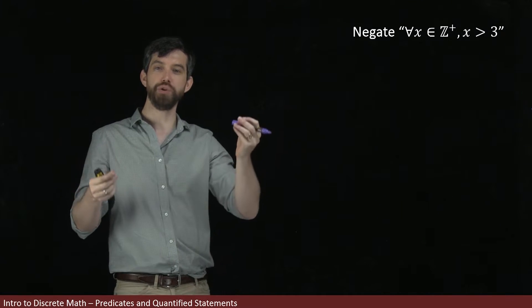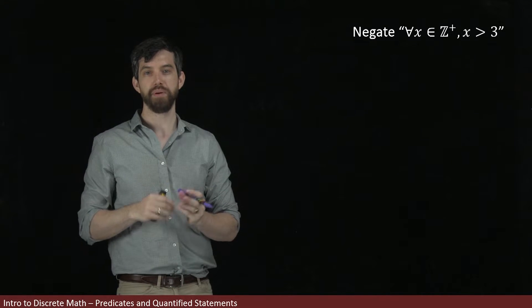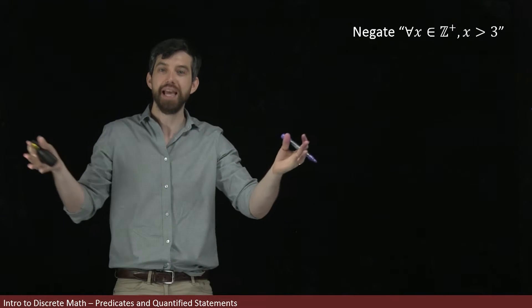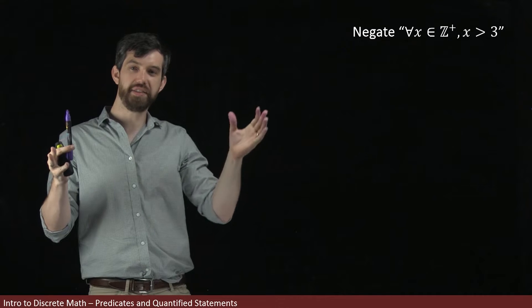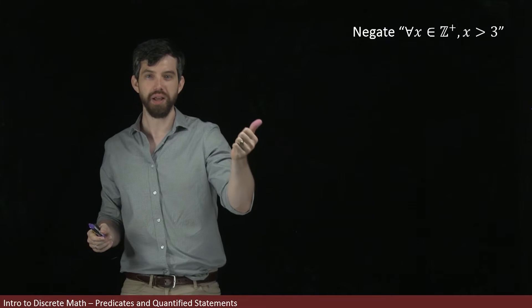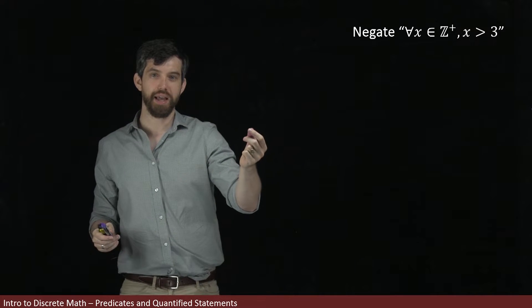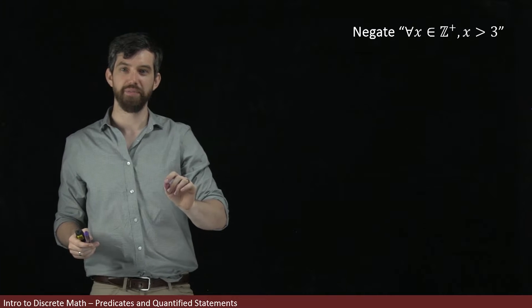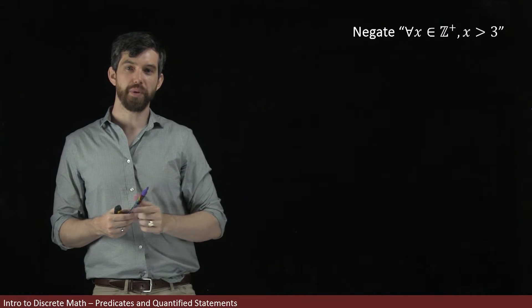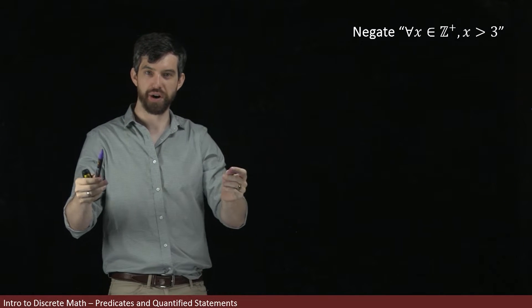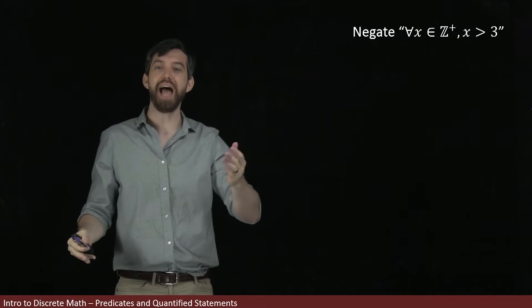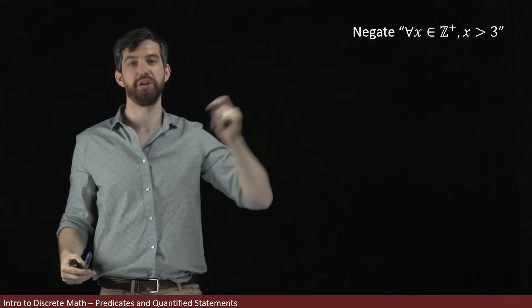We're tasked with negating that particular statement. But first, let's look at the statement itself and determine: is it true or is it false? I think this statement is false. The reason is that there are three different numbers I can think of: 1, 2, and 3. For all of those numbers, they're not greater than 3 — they're less than or equal to 3. So the statement that every positive integer x is greater than 3 is false, because I can think of a couple that are not greater than 3.